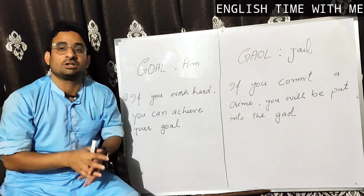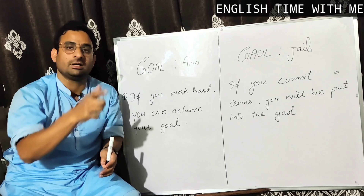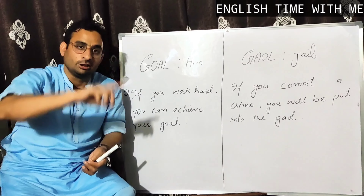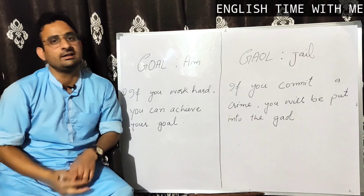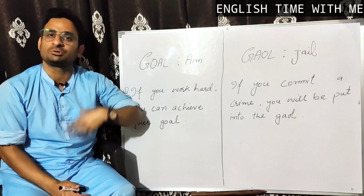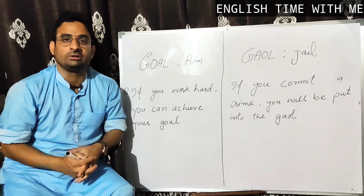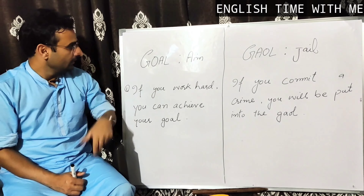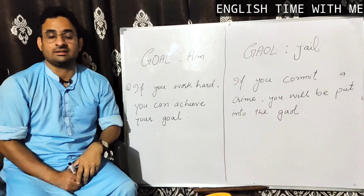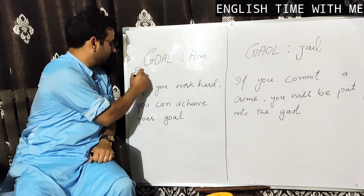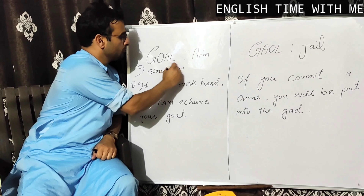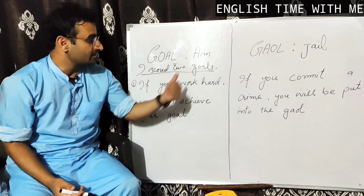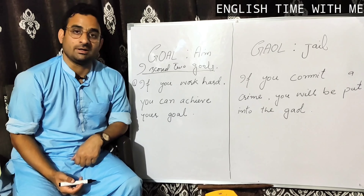'Goal' can also be seen in sports — it is a place wherein you have to put some object into it, like in football or soccer. There is a goal post, which is a target where you have to send the ball. For example: 'I scored two goals.' Here 'goals' is used as a noun.